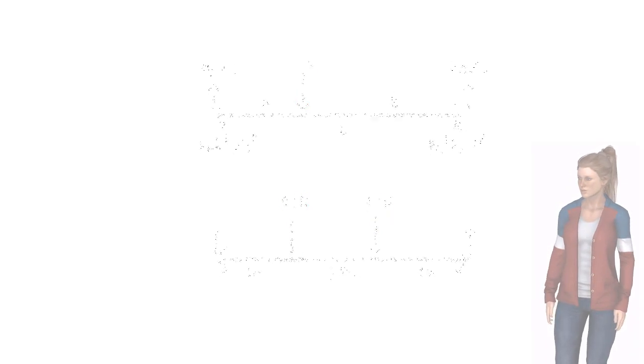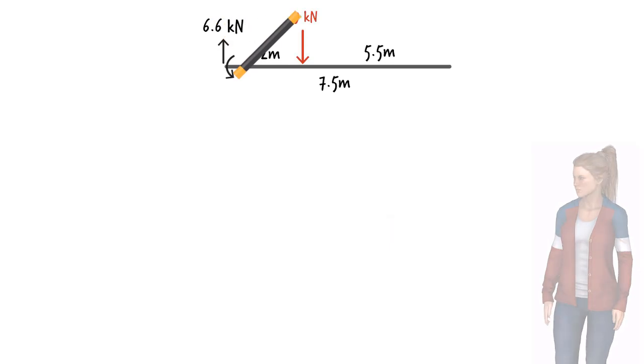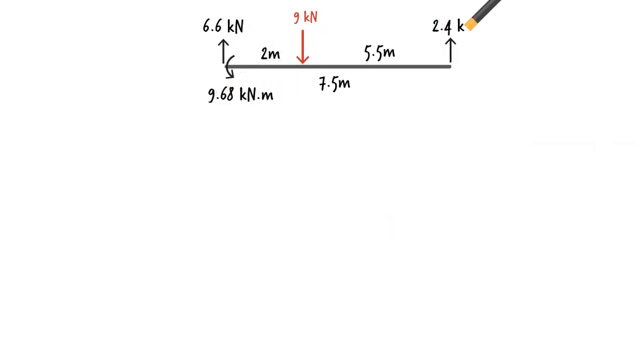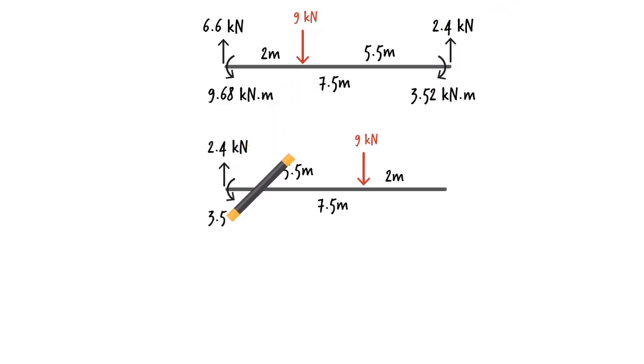For the load closest to the left end of the beam, we can write the fixed-end forces. And the load closest to the right end of the beam gives us another set. Adding these two sets of forces, we get the total fixed-end forces.